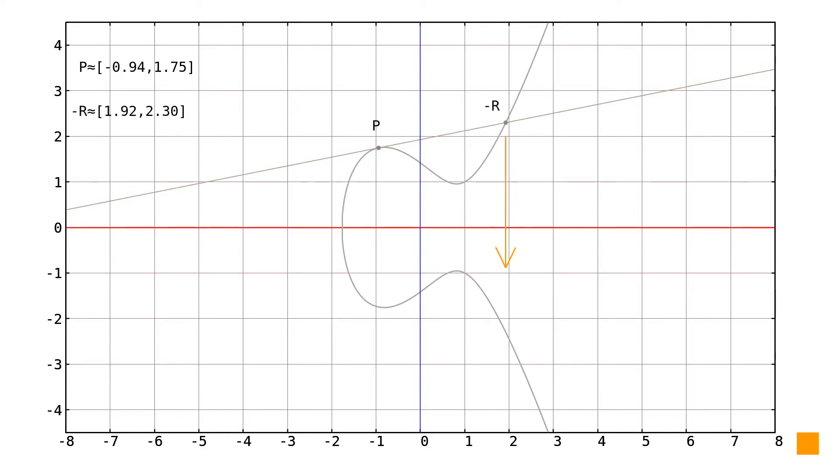As with addition, we flip this point over the x-axis and there lies the resulting point R, which is the double of the original point P.